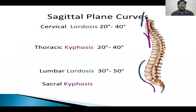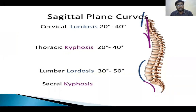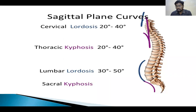What are the normal angulations of lordosis and kyphosis of the normal spine? In the cervical region, there is 20 to 40 degrees of lordosis. In the thoracic region, there is 20 to 40 degrees of kyphosis. And in the lumbar region, there is 30 to 50 degrees of lordosis.